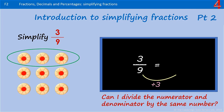9 divided by 3 is 3, and 3 divided by 3 is 1. 3 ninths is the same as 1 third.